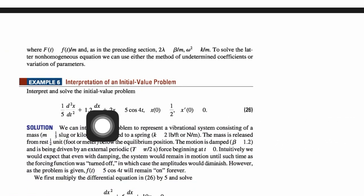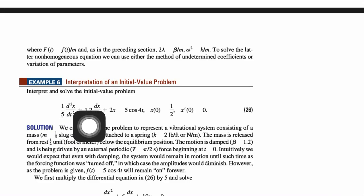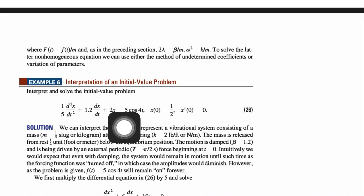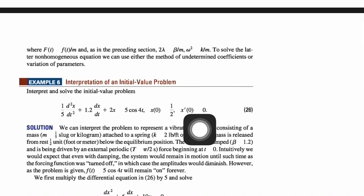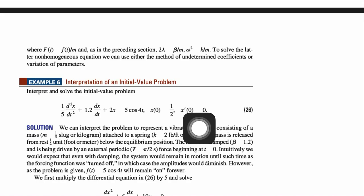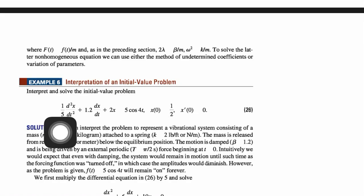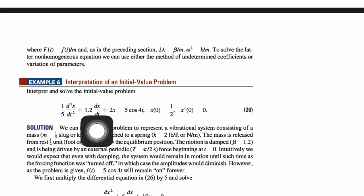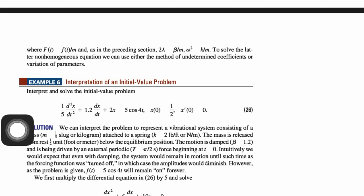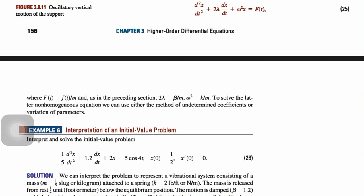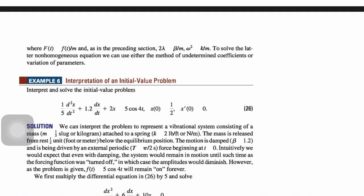Now here is an example of driven motion. The given equation is: (1/5)d²x/dt² + (1/2)dx/dt + 2x = 5cos(4t), with initial conditions x(0) = 1/2 and x'(0) = 0. Here the value of m is 1/5, the value of β is 1/2, the value of k is 2, and the forcing function is 5cos(4t).